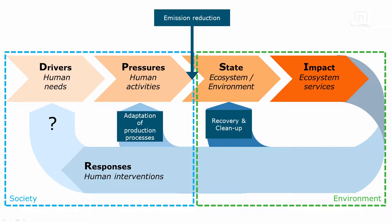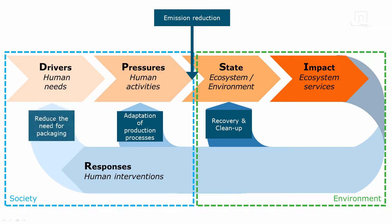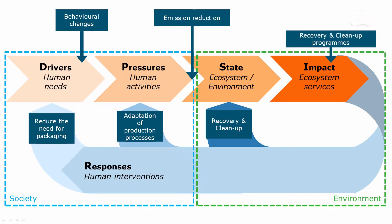Moving even further up the chain, we could also try to change people's behavior — for example, by reducing the amount of packaging material used. I am not saying this is always a feasible or wise solution, but it is important to keep an open mind and ask yourself: what can I do at this point in the chain? At the other end of the chain, at the site of the impacts, you can also intervene — an example would be to collect algae from polluted water.